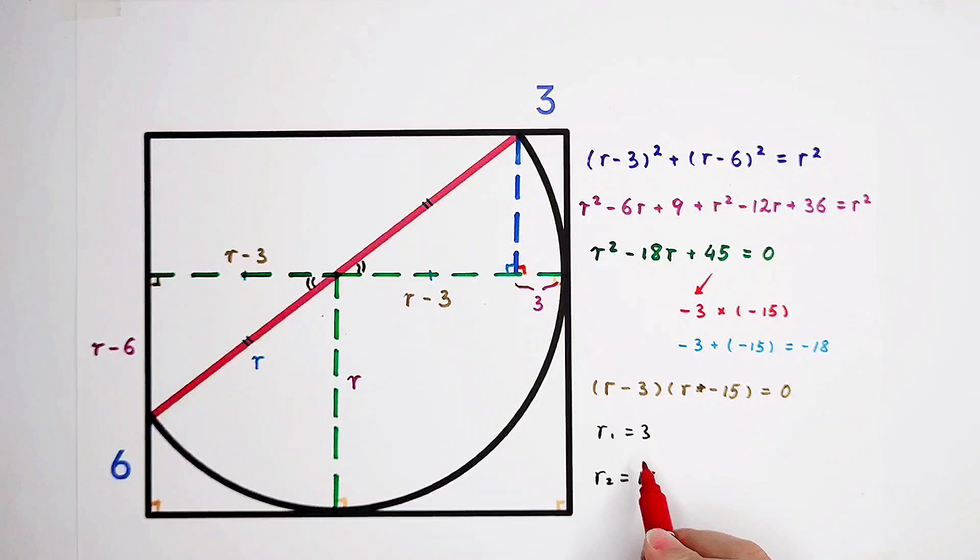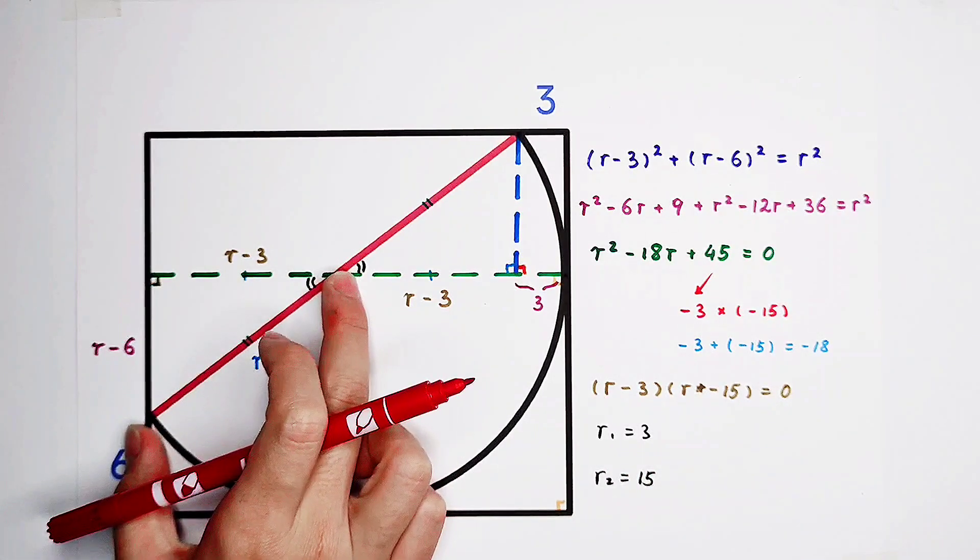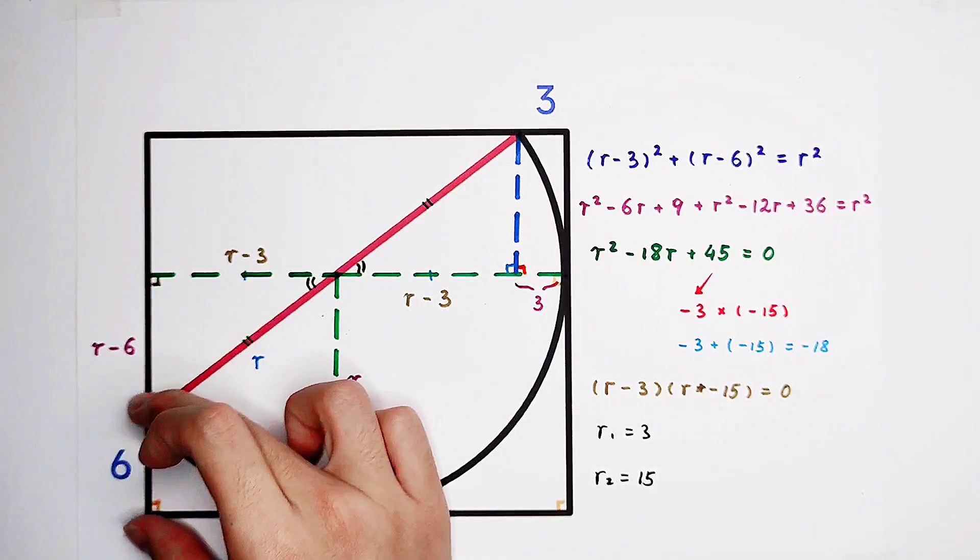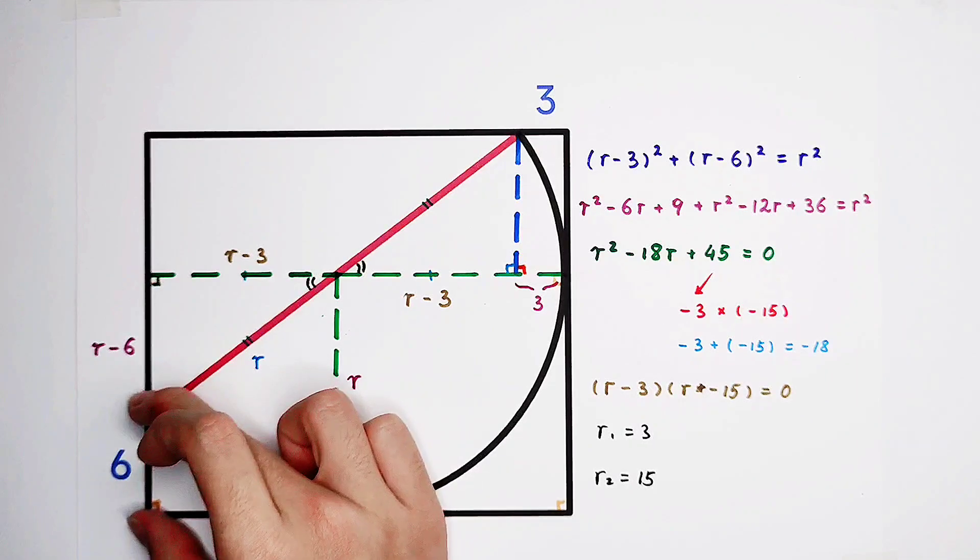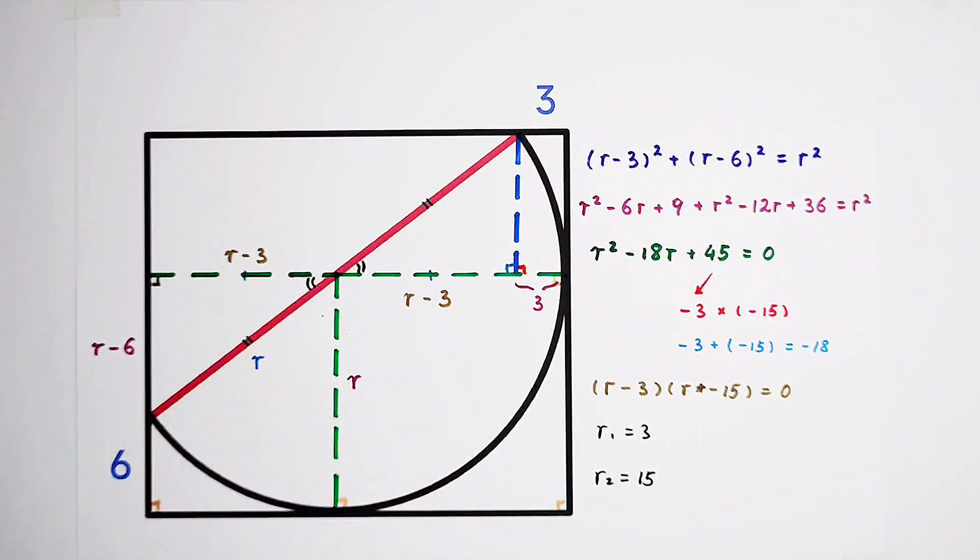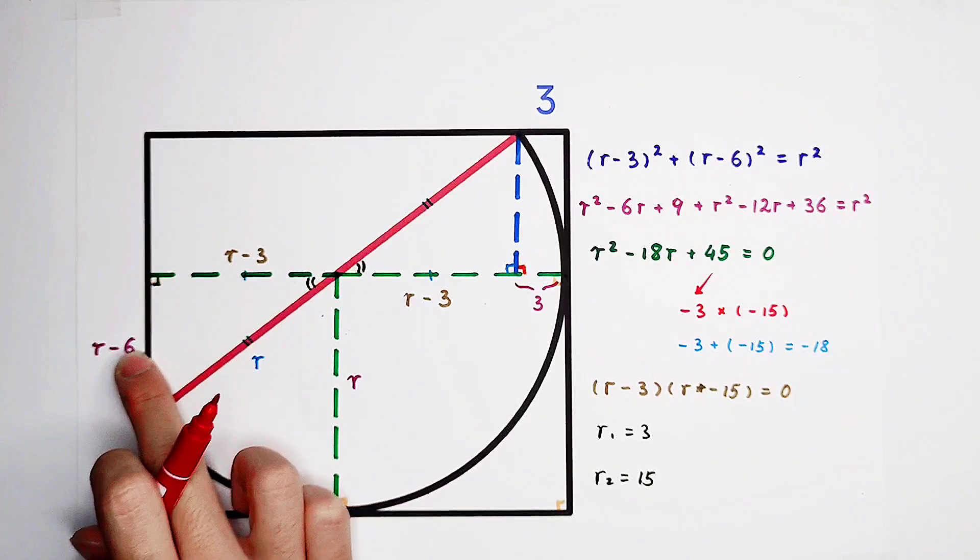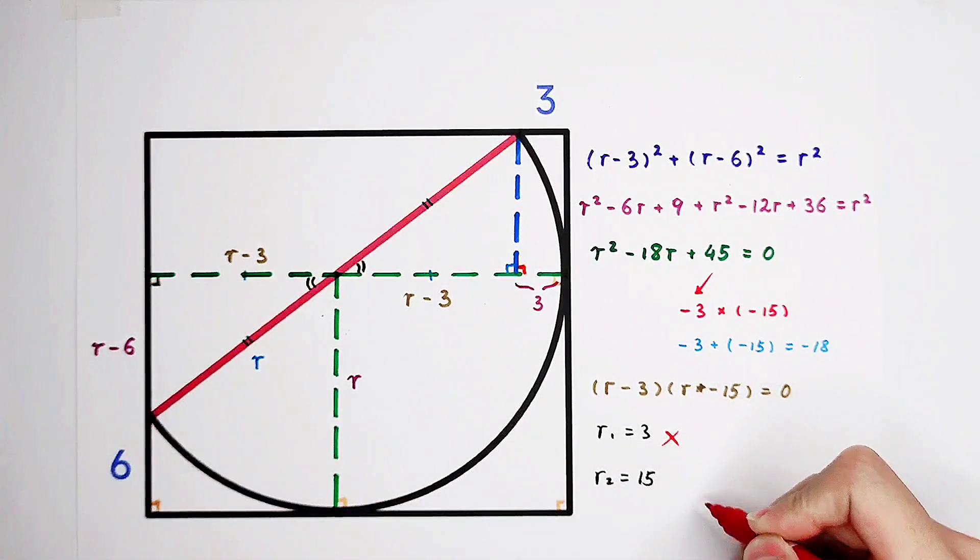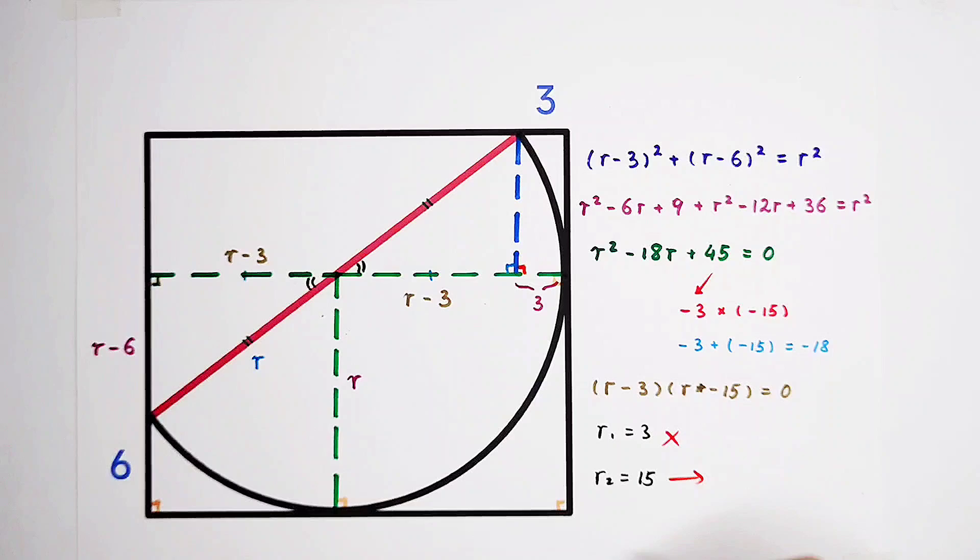If r is equal to 3, the radius is 3. However, this piece measures 6, and we all know that 6 is greater than 3. So that's impossible. Because 3 minus 6 is negative 3, and a distance can never be negative. The only choice is r is 15. And we can get the diameter is 30.